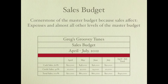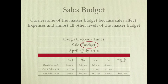Here's an example of a sales budget. Remember, this is a budget — something we anticipate or project will happen. In this case it covers April through July, four months, and we have our sales types and total sales for each month. Notice we have two ways we can make a sale: we can sell items for cash or on credit.